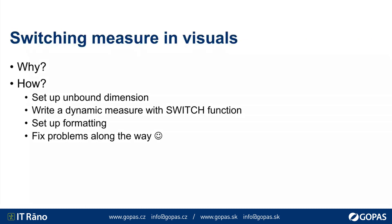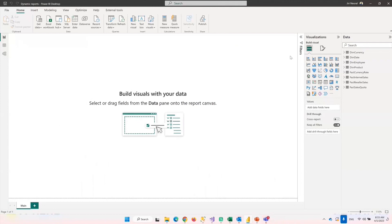Now let's have a look at dynamic reports. What I'm going to talk about is switching measures in visuals. In Power BI I get a quite common request that users want to see the same layout but with different measures - like being able to select if they want to see a sales amount or quantity, or to switch variances - whether to compare the actuals against target or against previous year. Let me show you the data model I'm using.